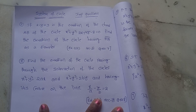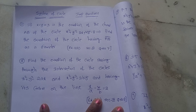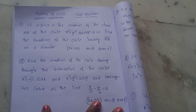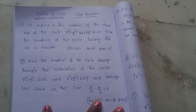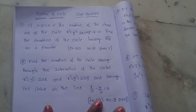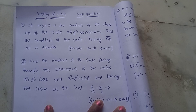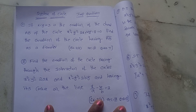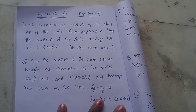Today's topic is System of Circles — important questions. First question: if x + y = 3 is the equation of the chord AB of the circle x² + y² − 2x + 4y − 8 = 0, find the equation of the circle having AB as a diameter. This is Exercise 2A, Section 3, Question 7.